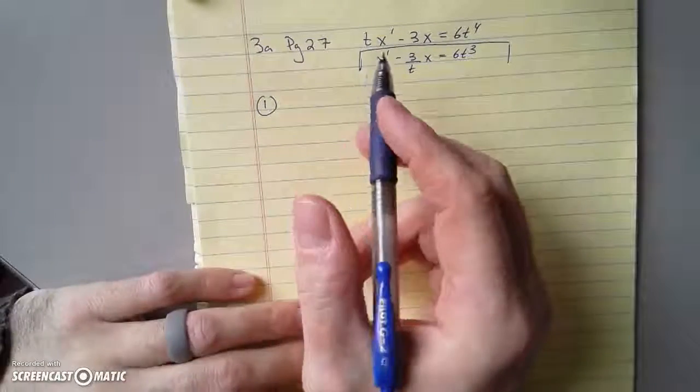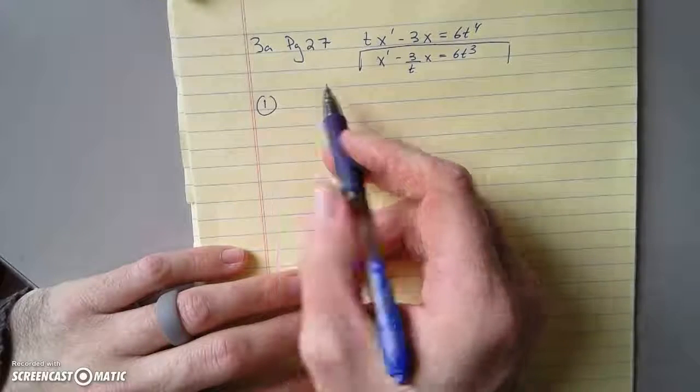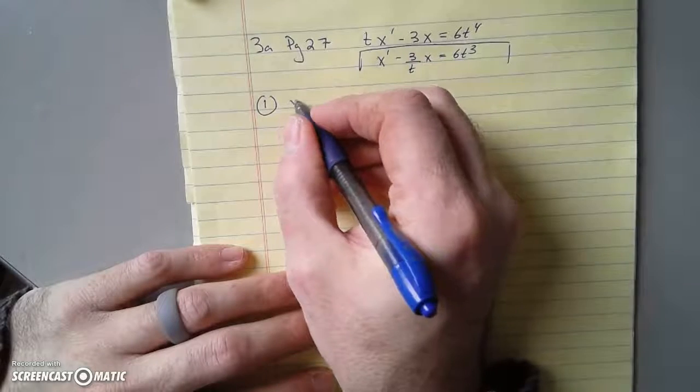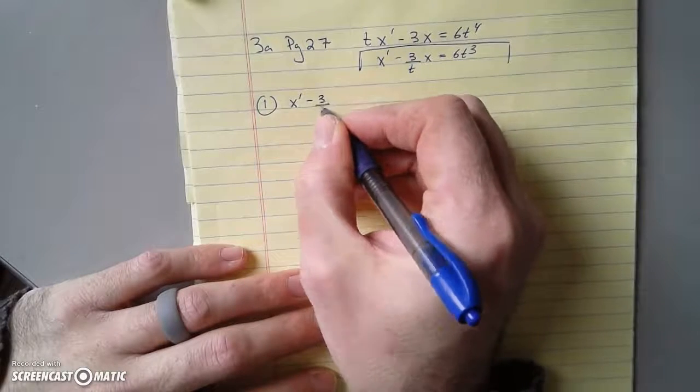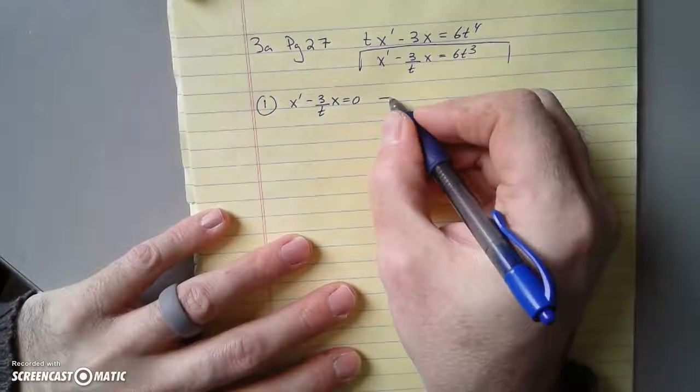So the first step. And you should try this yourself. You know, pause the video often. What do you do first? Yeah, that's correct. x' - 3/t x = 0. We solve the easy one. How do we do this?